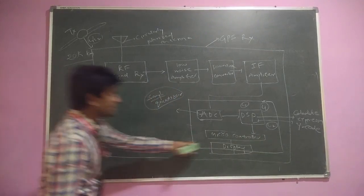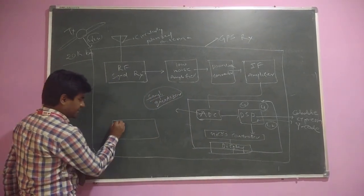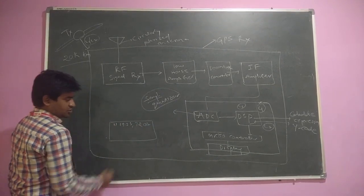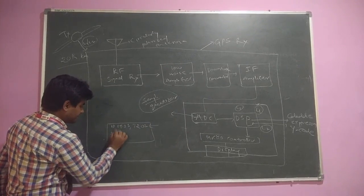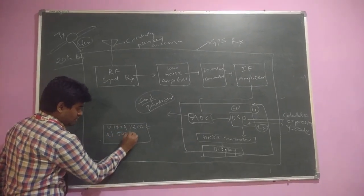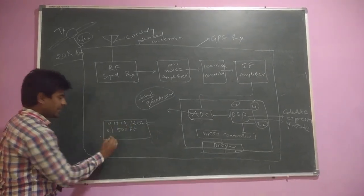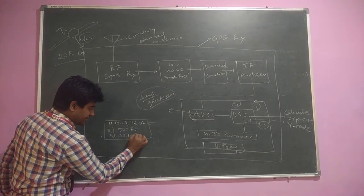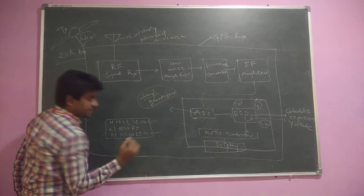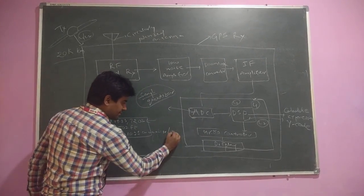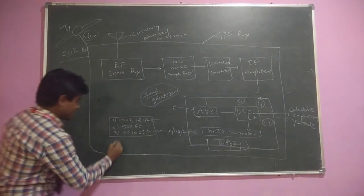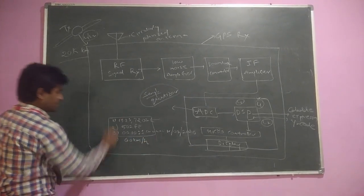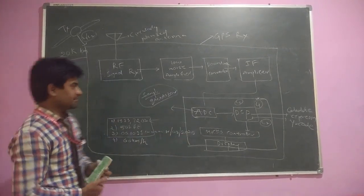On the display we can see: latitude value 19.23, longitude 17.02, height 502 feet above mean sea level, time 00:10:23 seconds, date 18/03/2020, and speed 60 km per hour. These four parameters — latitude, longitude, height, time, and speed — are displayed on the GPS receiver screen.